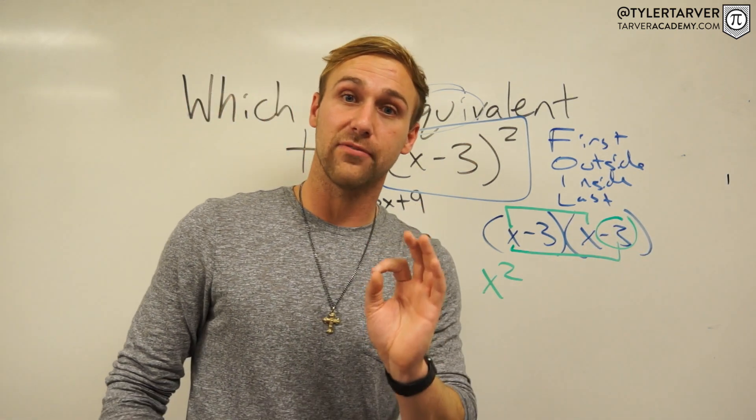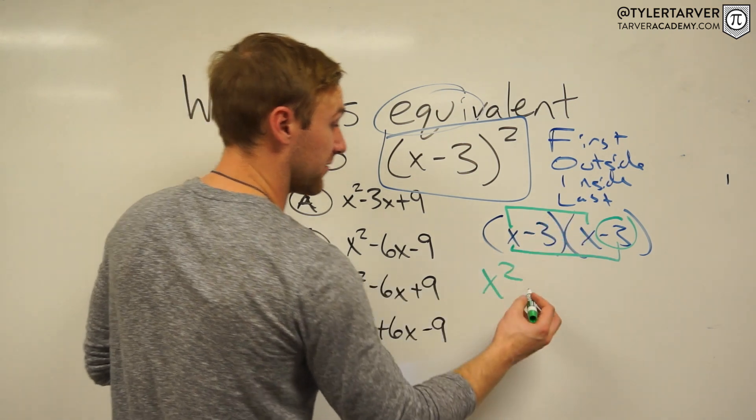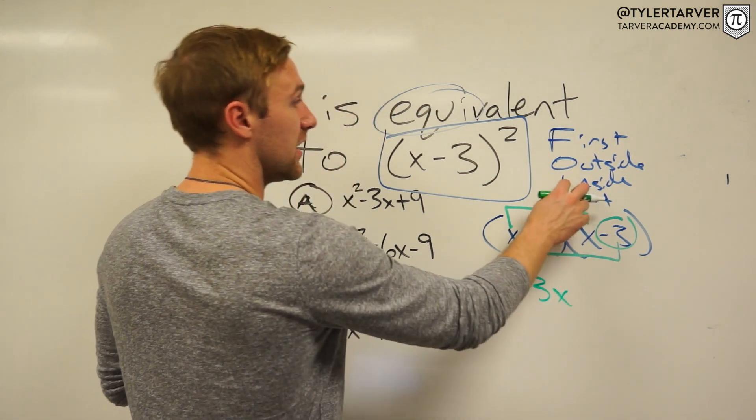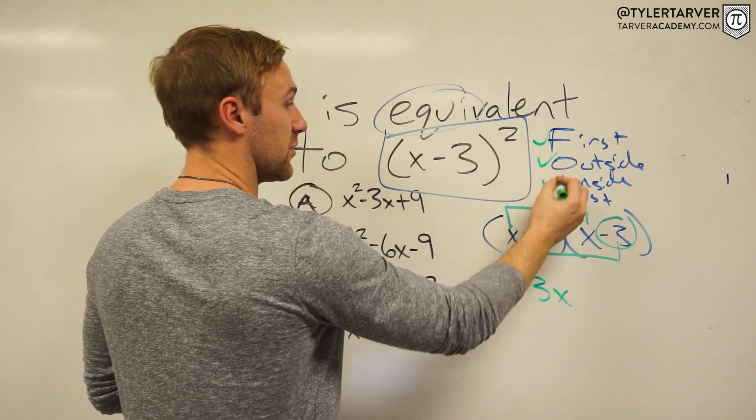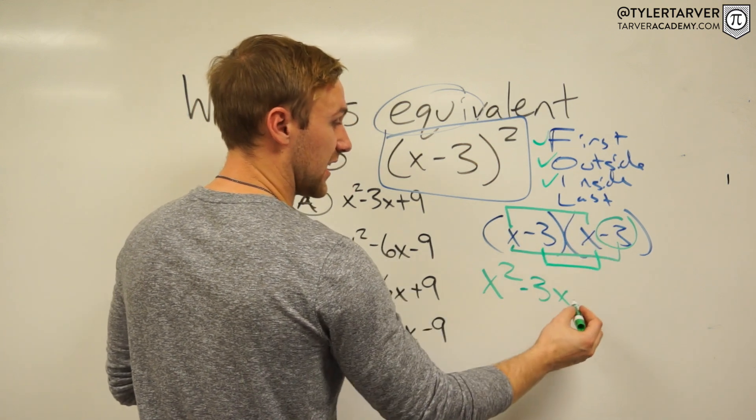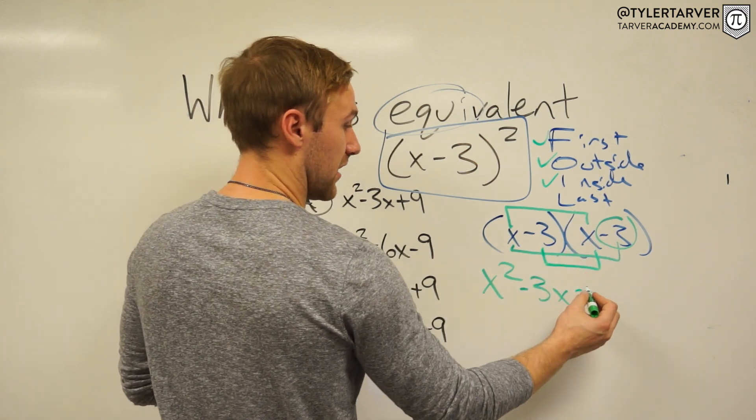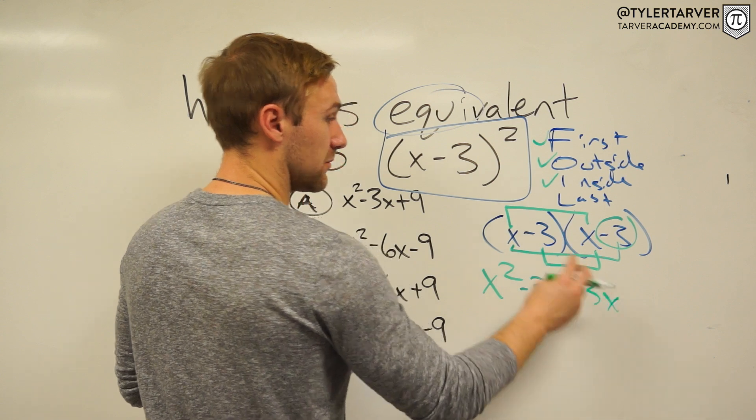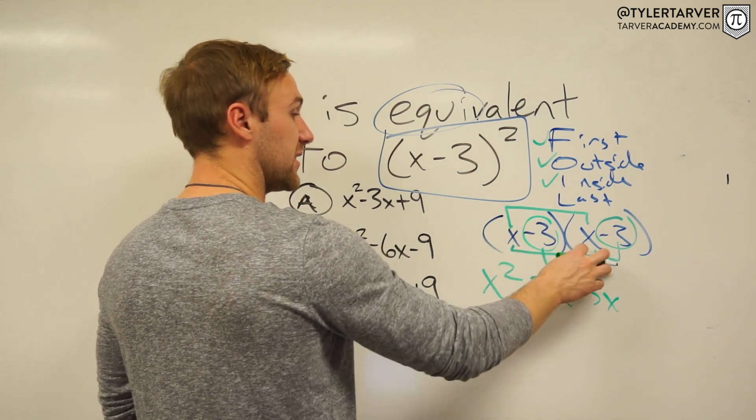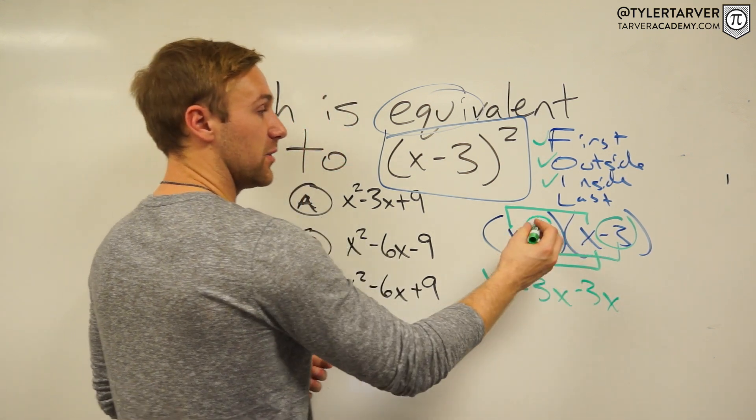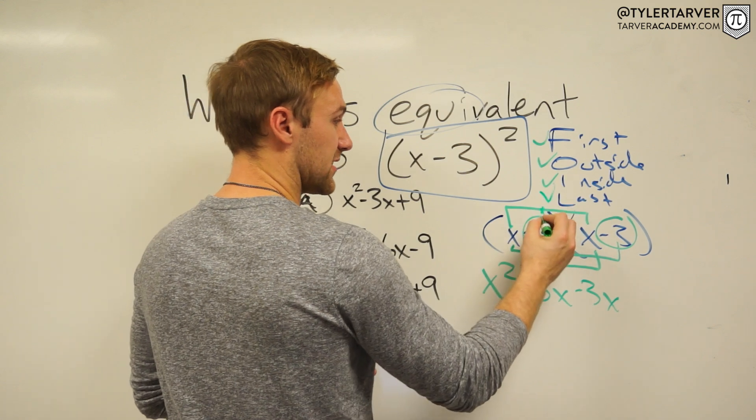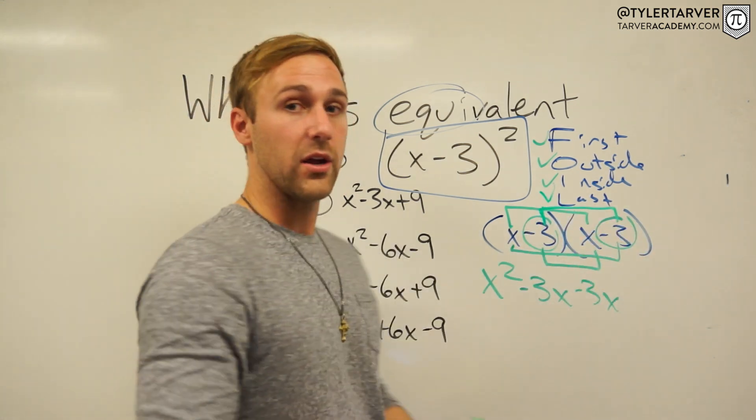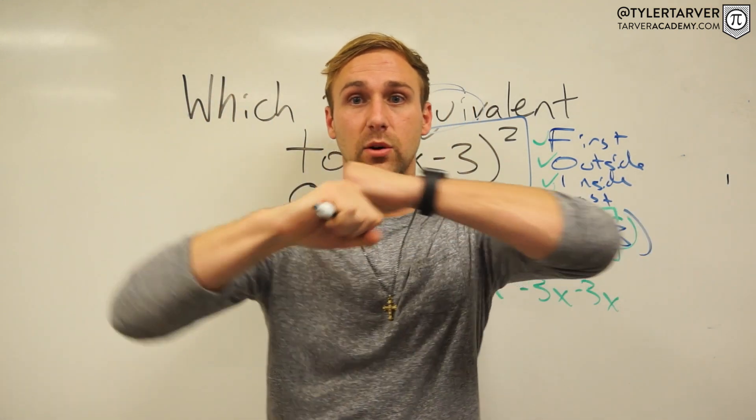First, and then we do Outside: x times negative 3. A lot of people forget to pull the negative with it. Do not forget that. x times negative 3, which is negative 3x. Inside, we did First, we did Outside, let's do Inside, which would be negative 3 times x again. So it'd be negative 3x. Remember, the negative goes with it. So negative 3 times x, negative 3x. And then we do Last, which is the last two numbers: negative 3 times negative 3. A negative times a negative equals a positive. Good job, everybody! Positive 9.